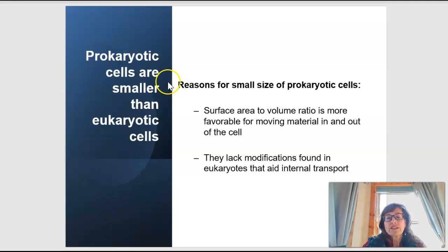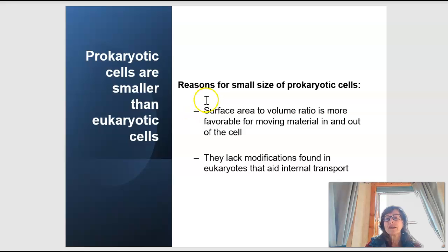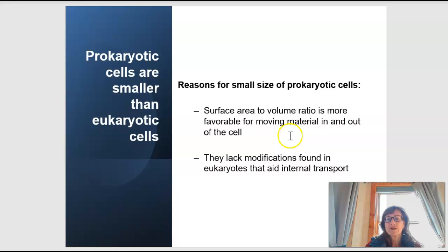Prokaryotic cells differ from eukaryotic cells significantly in size. Cell size is an important consideration because small size facilitates materials passing into and out of the cell via the surrounding membrane. Smaller size allows a greater surface area compared to the volume or space the cell takes up. This surface area to volume ratio is much better in very small cells, which helps things move in and out of the cell.